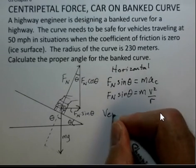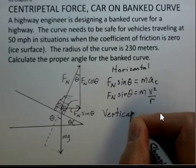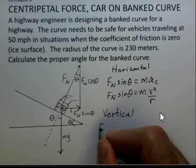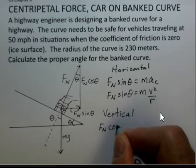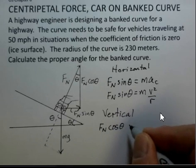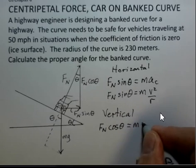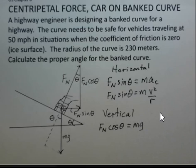The vertical component of the normal force is equal to the weight of the car. So vertical, our Fn, and now cosine theta gives us the vertical component, is the same size as mg.